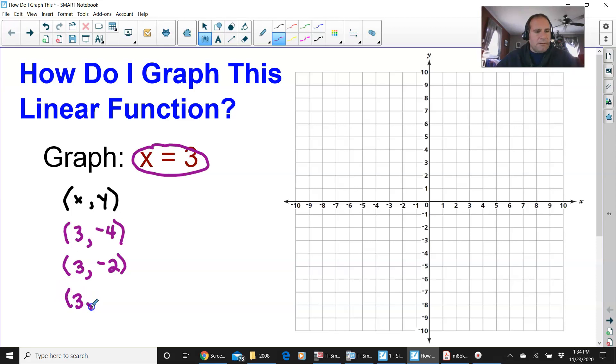Then 3, 0. I could even pick 3, 4, and 3, 6. You really don't need this many points to graph it, but we're going to graph it now.